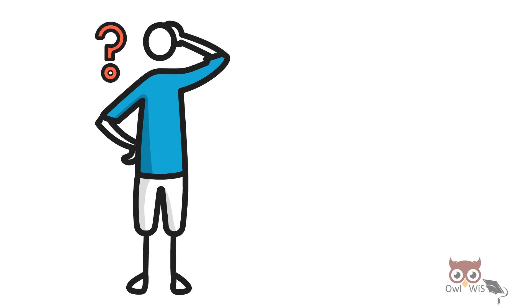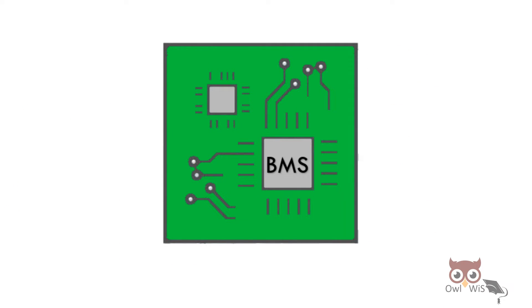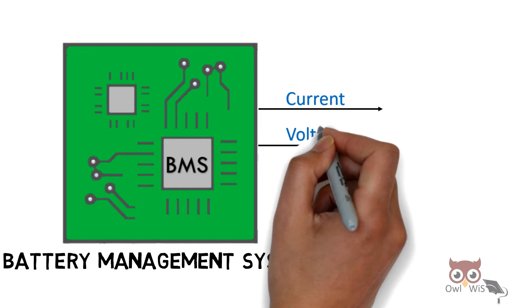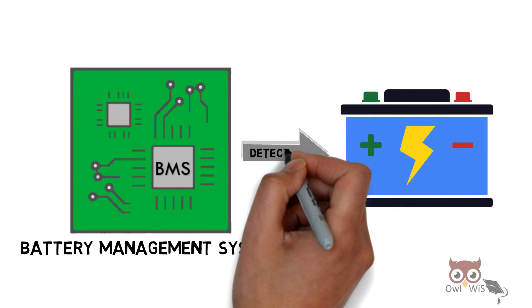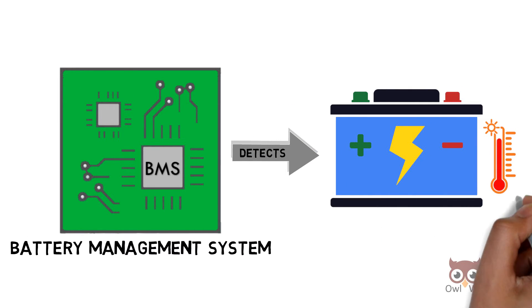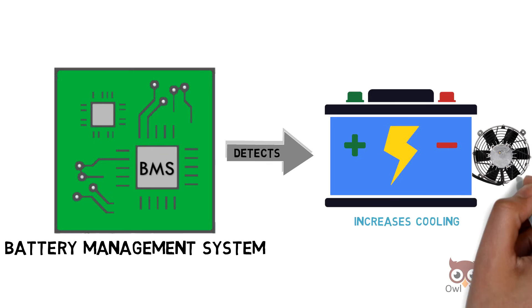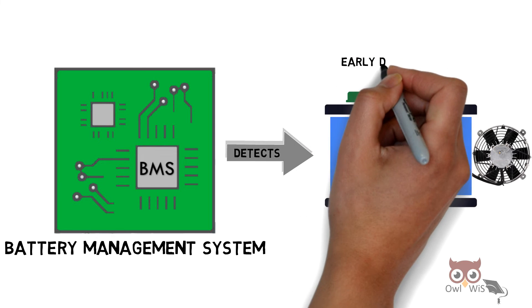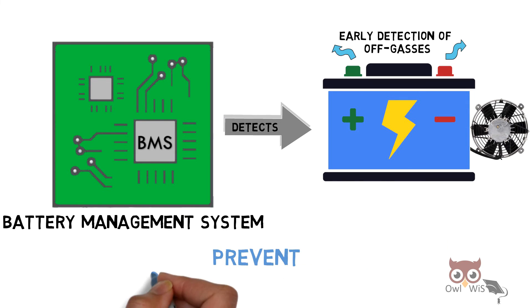So, how do we prevent thermal runaway? Each battery is associated with a battery management system, which monitors the current, voltage, and temperature of the battery. If it detects any kind of high temperature, it increases the cooling. Even after cooling, if the temperature doesn't reduce, then it shuts off the battery safely. Also, early detection of off-gases released from the battery can be an indication in order to prevent thermal runaway.